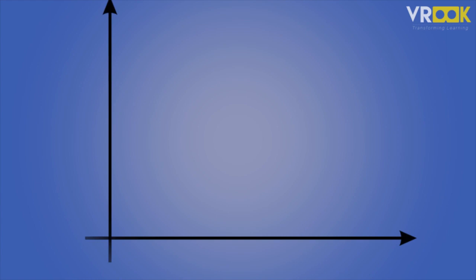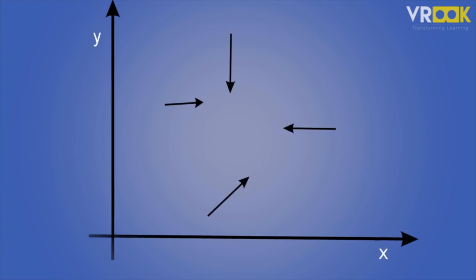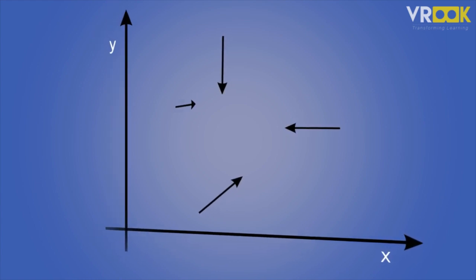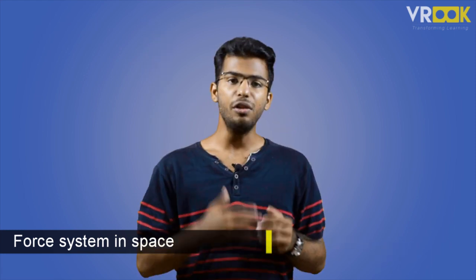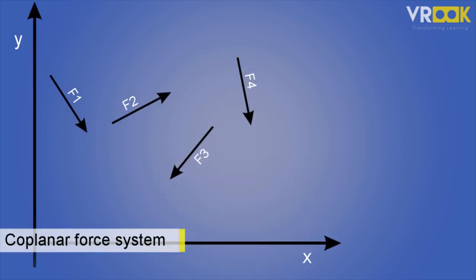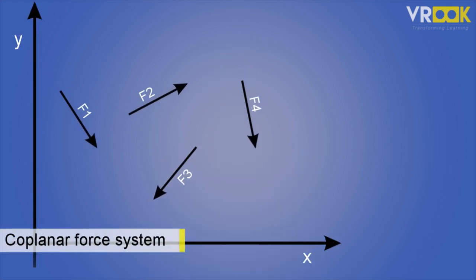When several forces act on a body like a beam or a truss, they constitute a force system. There are different types of force systems. If all the forces in a force system do not lie in a single plane — for example, an XY plane — they constitute a force system in space. If all the forces lie in a single plane, it is called a coplanar force system.